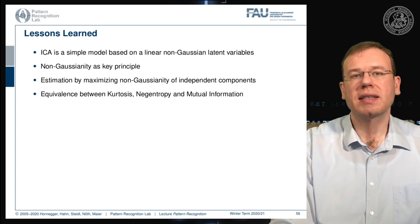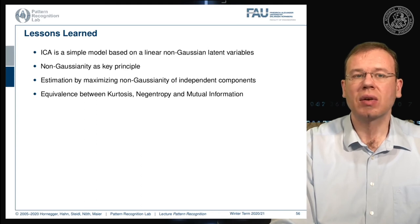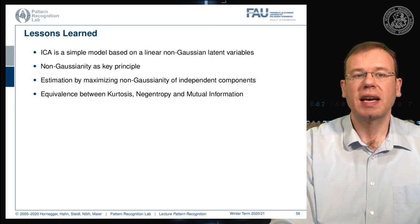The key lessons from ICA: it is a simple model based on linear non-Gaussian latent variables. By mixing these non-Gaussian latent variables we create something more Gaussian, so non-Gaussianity is the key principle for computing the separation matrix. We estimate this by maximizing non-Gaussianity, and we can equivalently use kurtosis, negentropy, or mutual information to measure it.